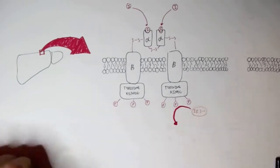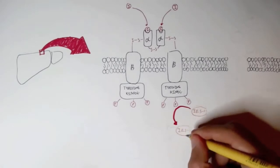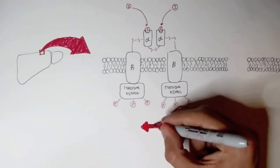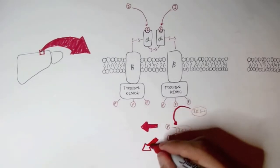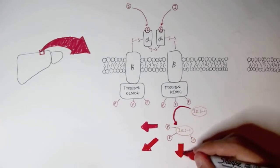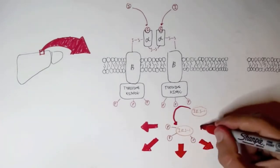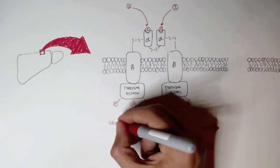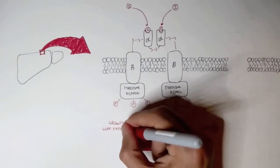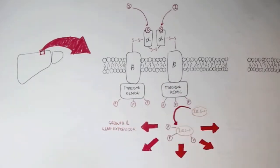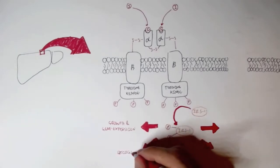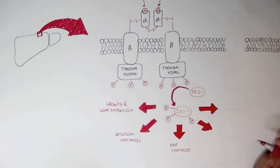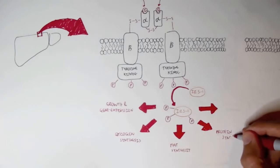Once insulin binds to the alpha subunits — and there need to be two insulins binding — it will cause an inner membrane protein known as IRS1 to be phosphorylated, activating IRS1 as the target protein. Once phosphorylated, IRS1 has many effects on the cell: it promotes growth and gene expression, promotes glycogen synthesis for glucose storage, and also promotes fat synthesis — specifically the synthesis of triacylglycerols.